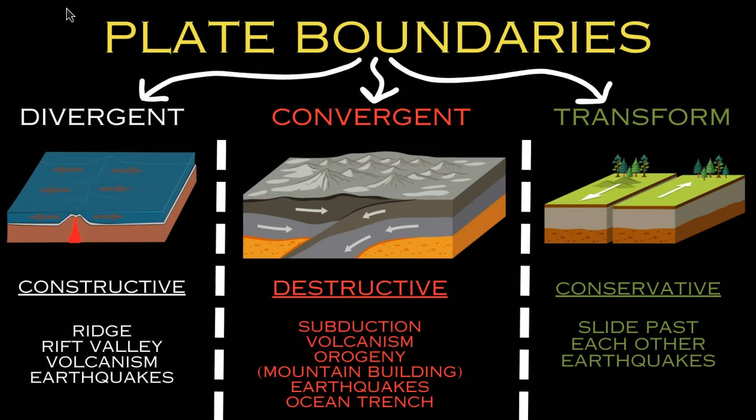You also get an ocean trench with any subduction, where the subducting plate goes beneath the other plate, causing a very deep part of the ocean to form. The classic examples are around the edge of the Pacific Ocean with the Ring of Fire.